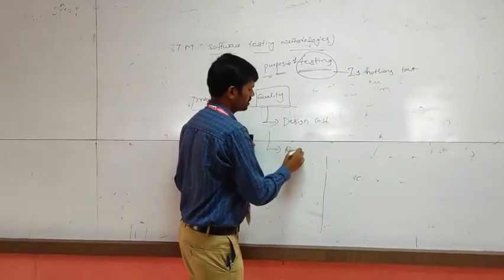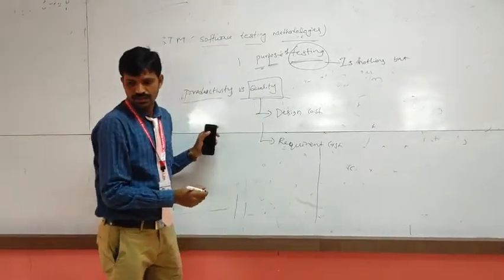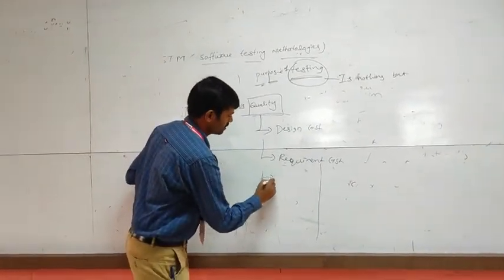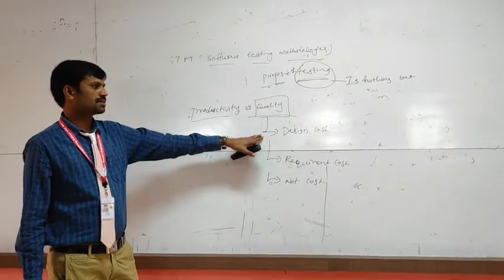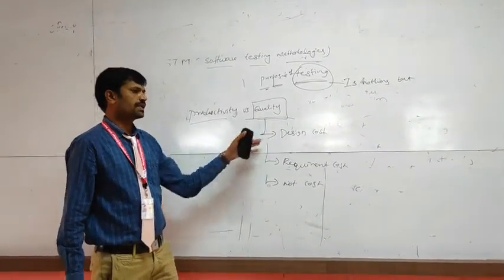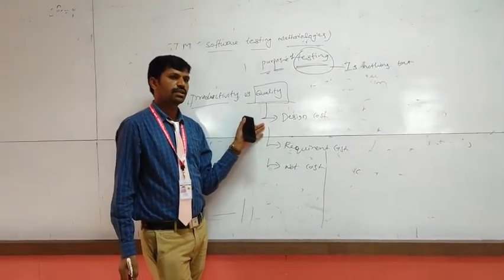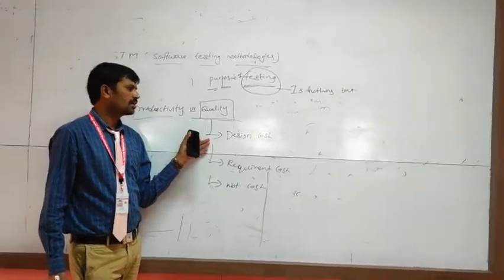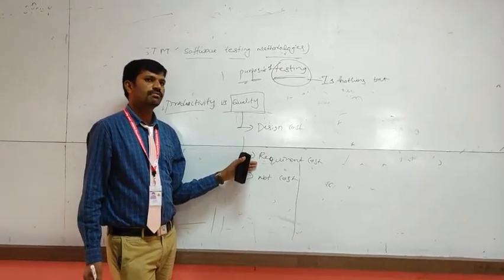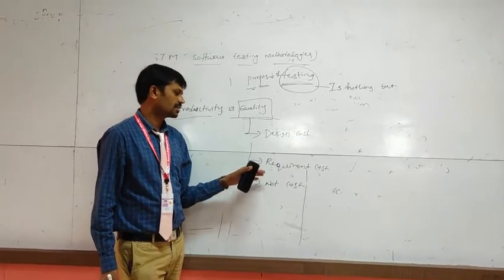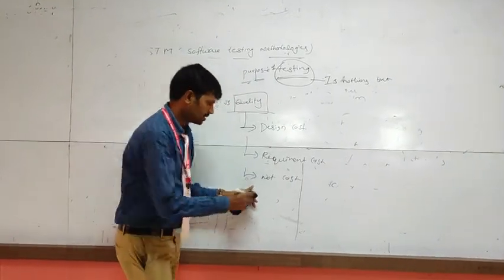The second one is requirements cost. We have need cost and design cost. Design cost is mainly concentrated on creating the best document. For requirement cost, we have to select the best requirements. If requirements are satisfied, okay; if not satisfied, we have to go for net cost.